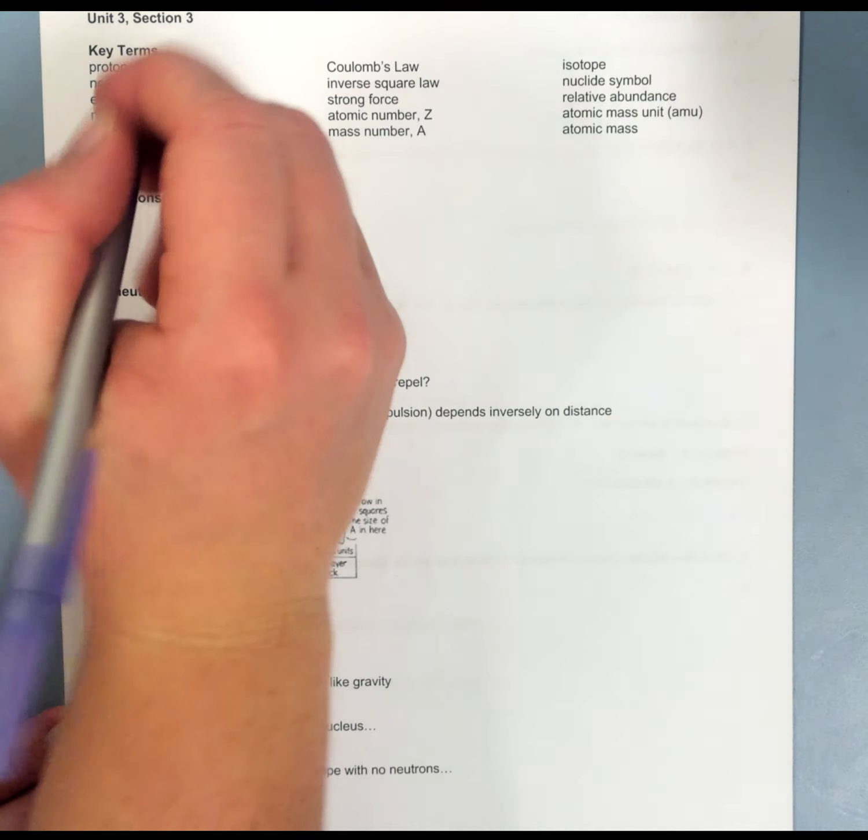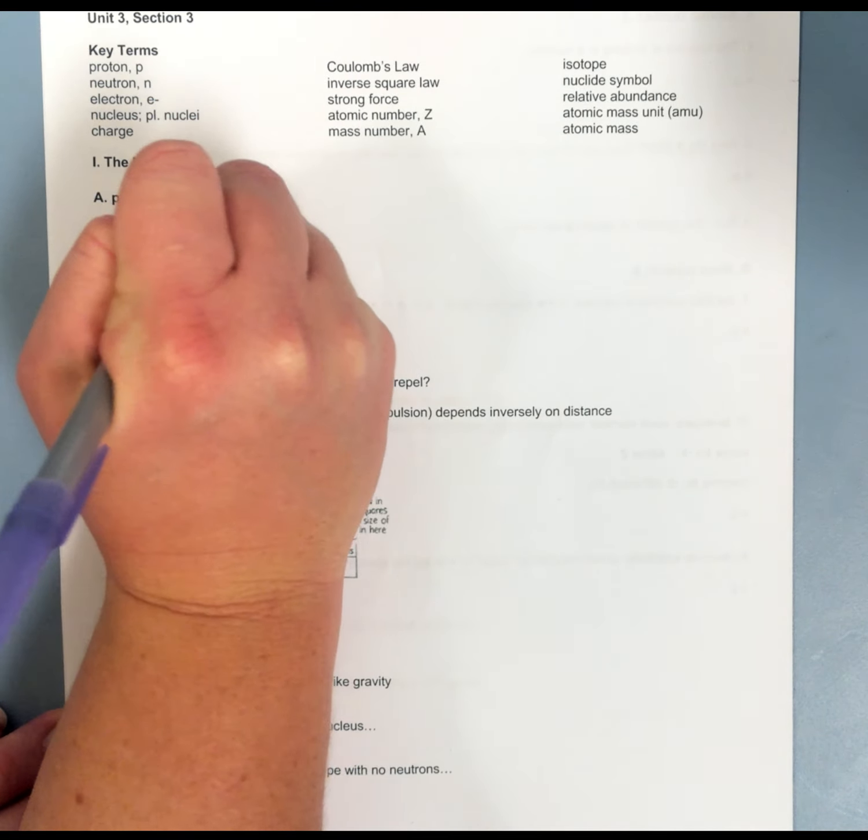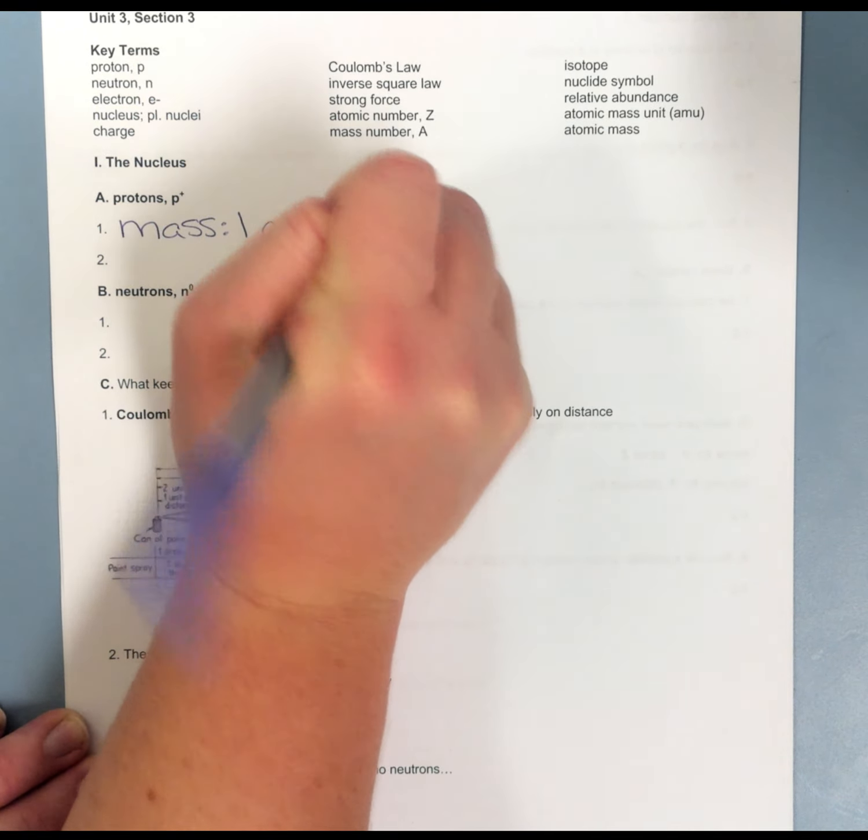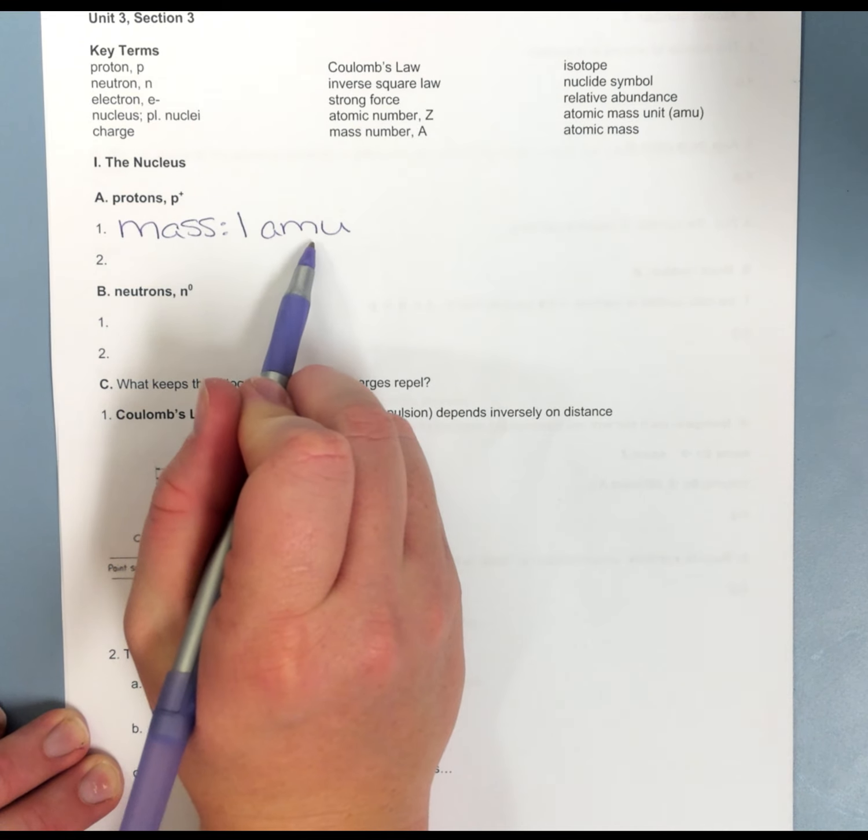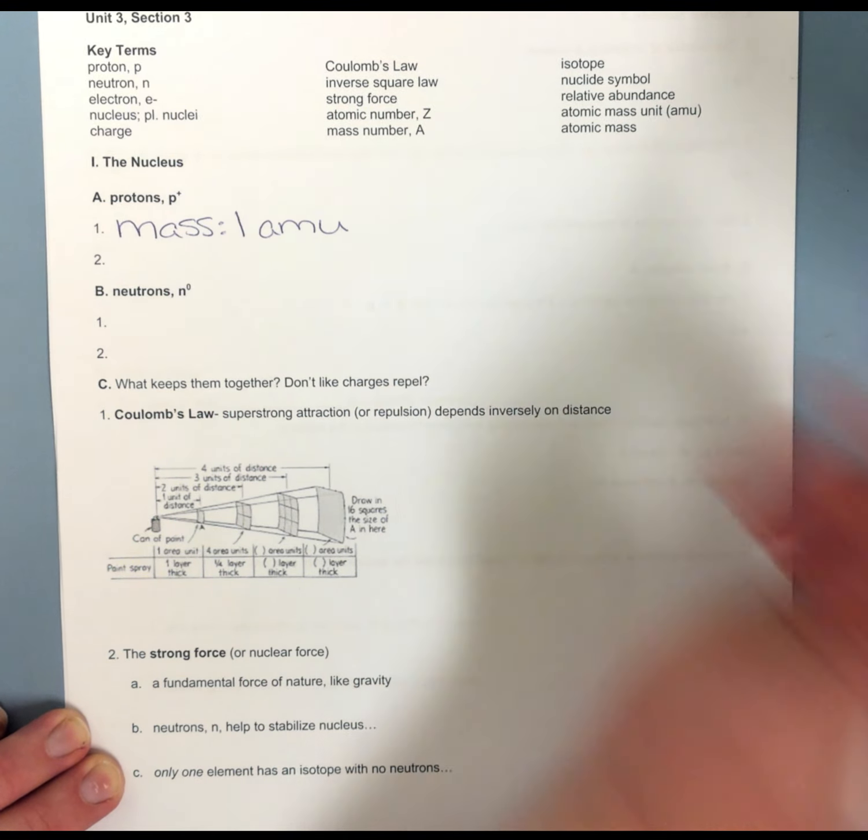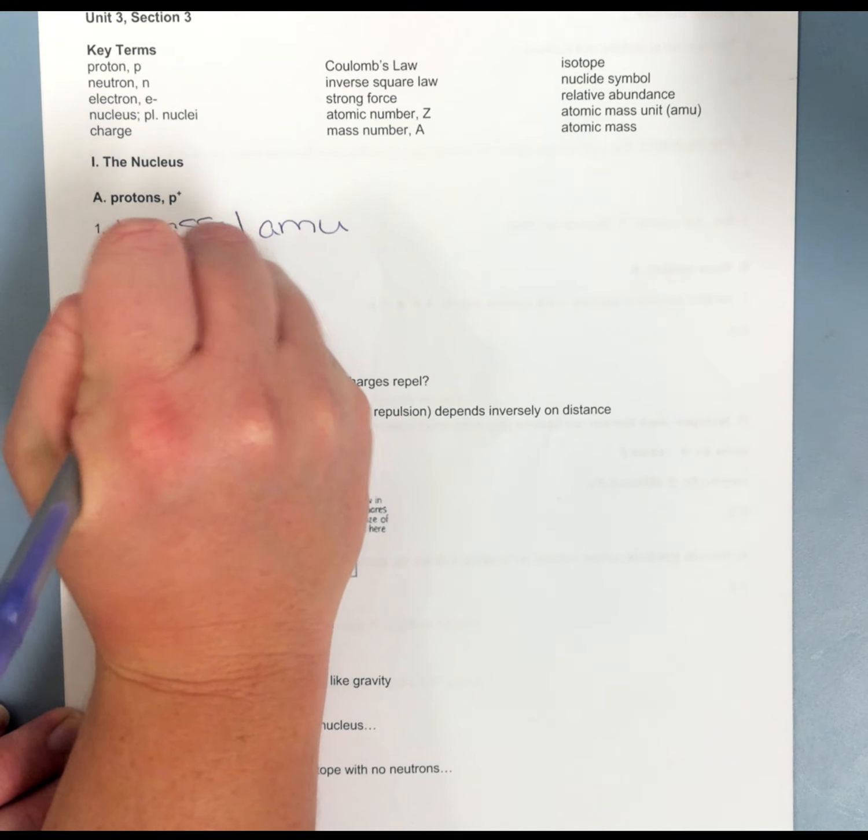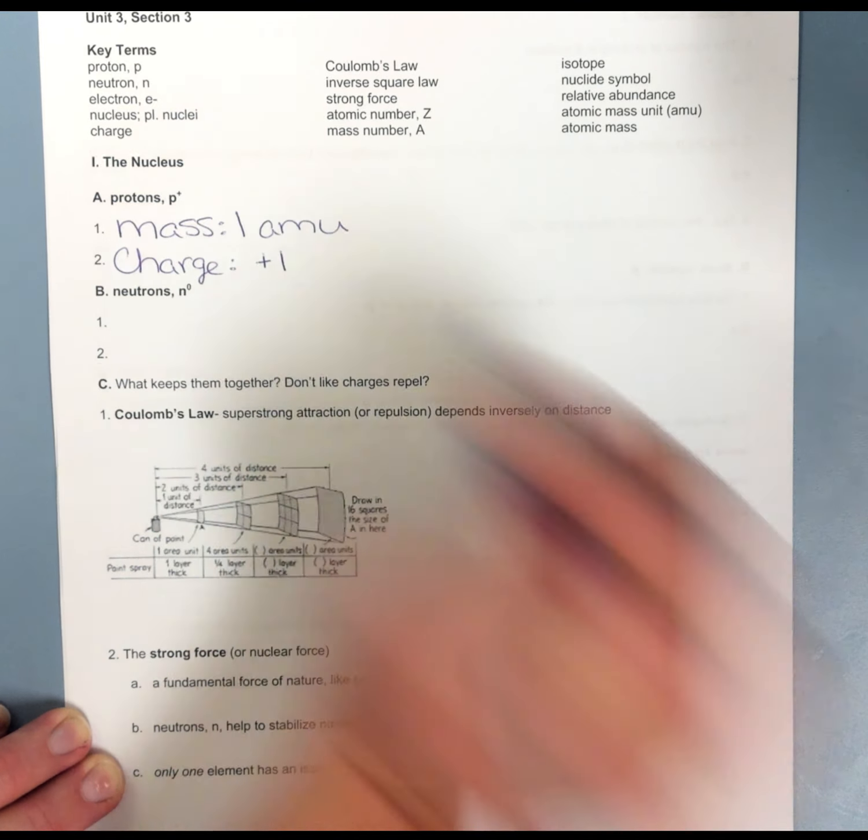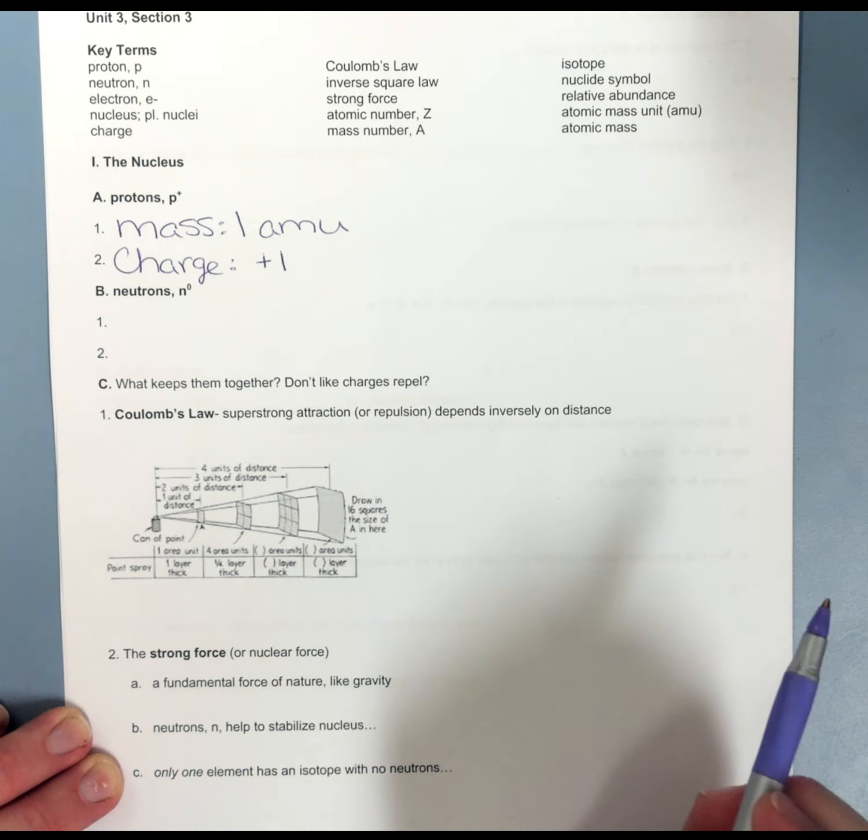The nucleus is made up of protons and neutrons. Protons have a mass of one amu. Amu stands for Atomic Mass Unit. Protons have a charge of plus one. Think, protons are positive.